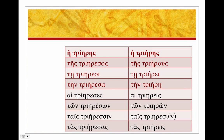The first noun is trieres, meaning trireme. It's technically an adjective, or it comes from an adjective — it's modifying 'ship' — but it's a type of Greek battleship. What I've done here is given you the uncontracted forms so you can see the endings.